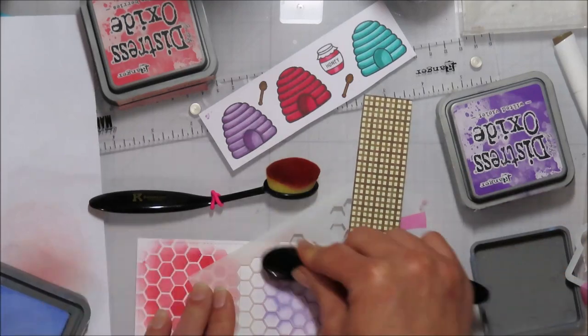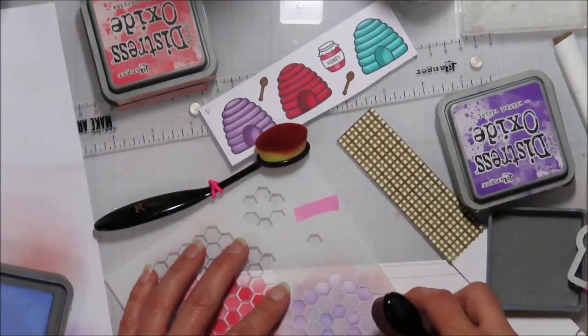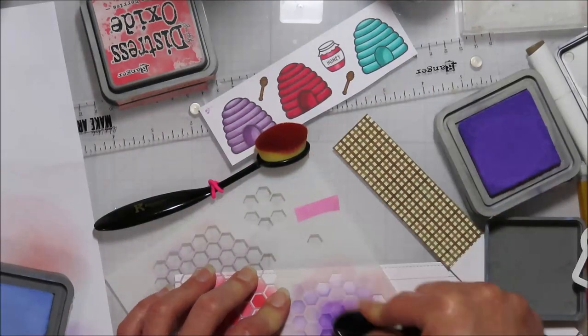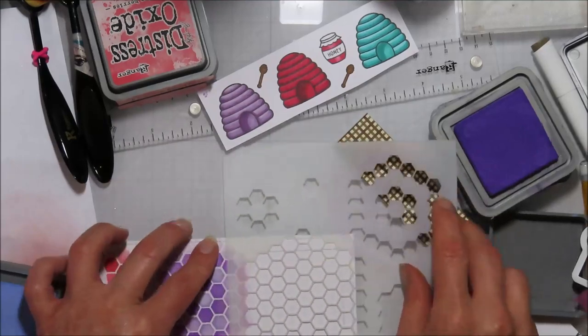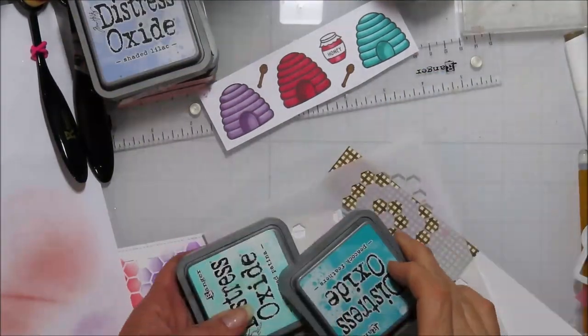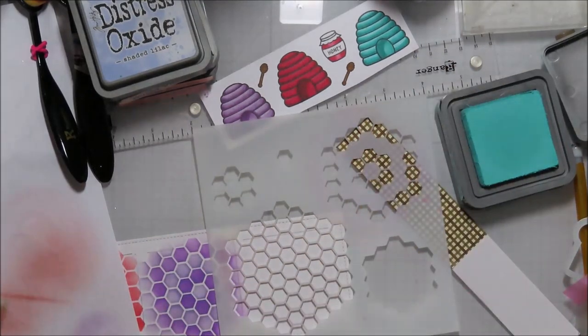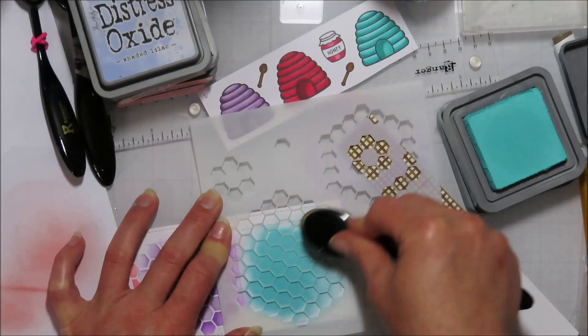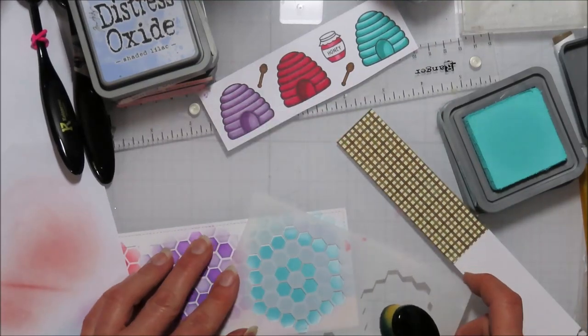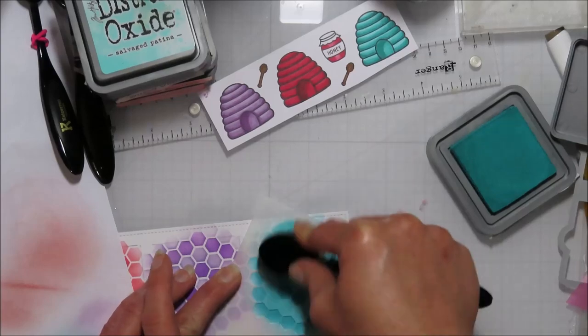For the purples I'm using wilted violet and shaded lilac. Shaded lilac being the lighter shade. And then for that teal color I'm going to use the lighter two of those teal shades that I used on the shape hexagon card. So salvage patina and then was it mermaid lagoon? No peacock feathers. And peacock feathers.